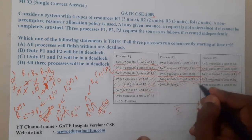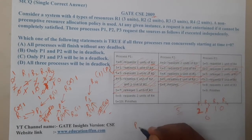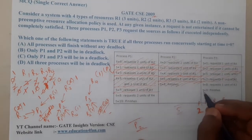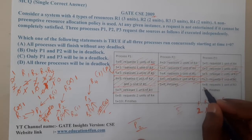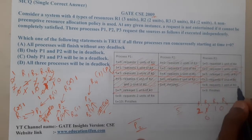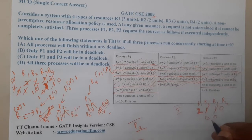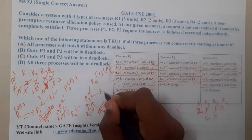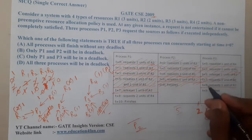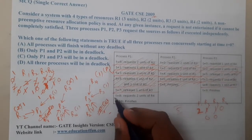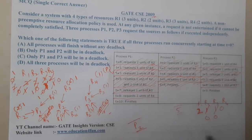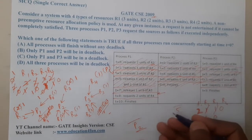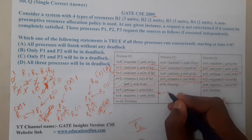P2 has now completed its execution — P2 is the first process to finish successfully. Moving to time t8, P1 requests 2 units of R4. However, we do not have 2 units of R4 available, so this request is paused again.